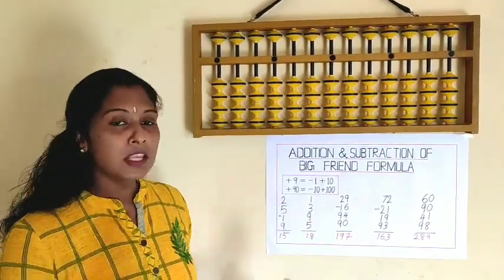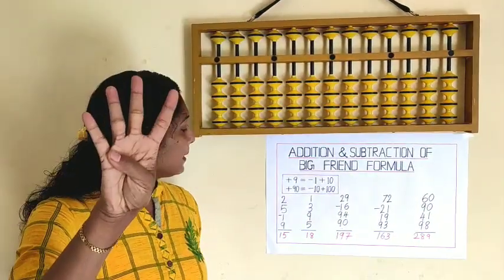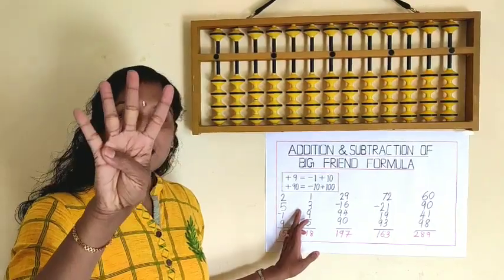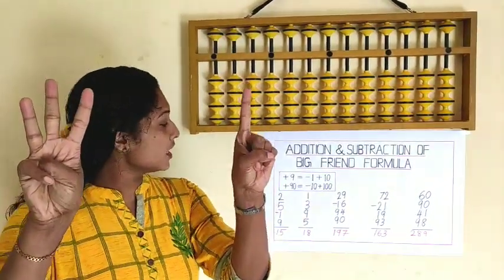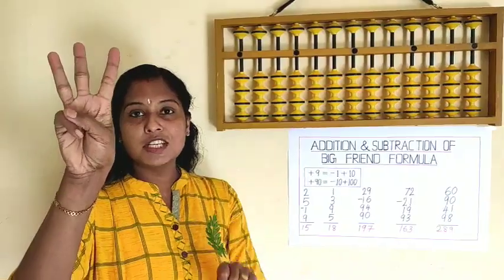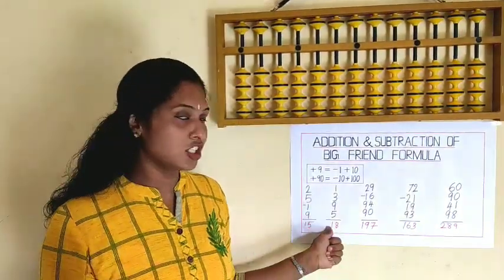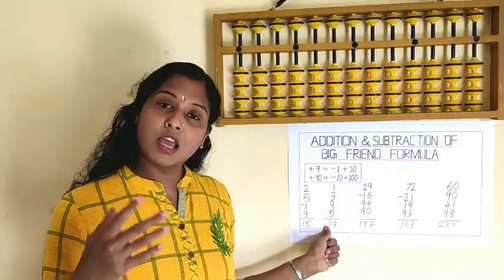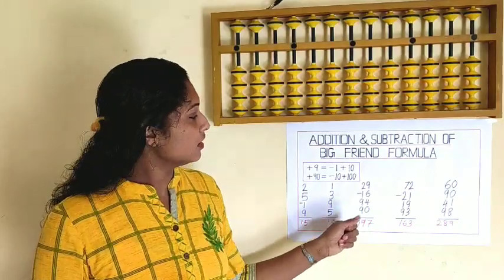The next sum: 1, plus 3, plus 9 — minus 1, plus 10, plus 5. What is the answer? 10, 15, 16, 17, 18. We have already got the answer 18.